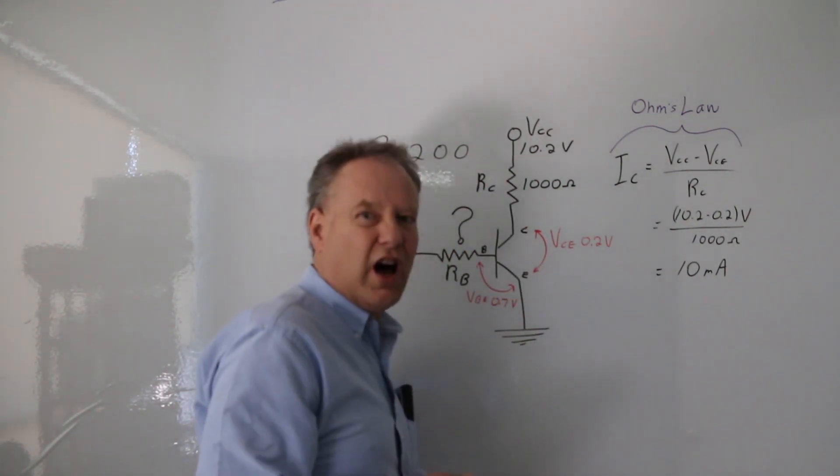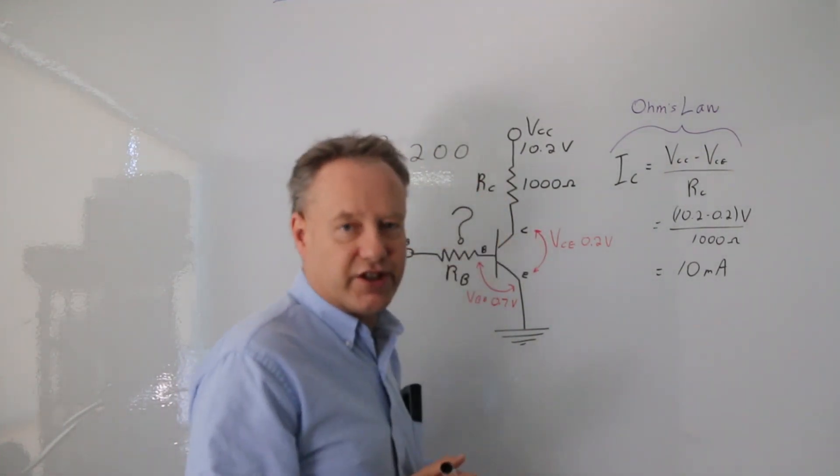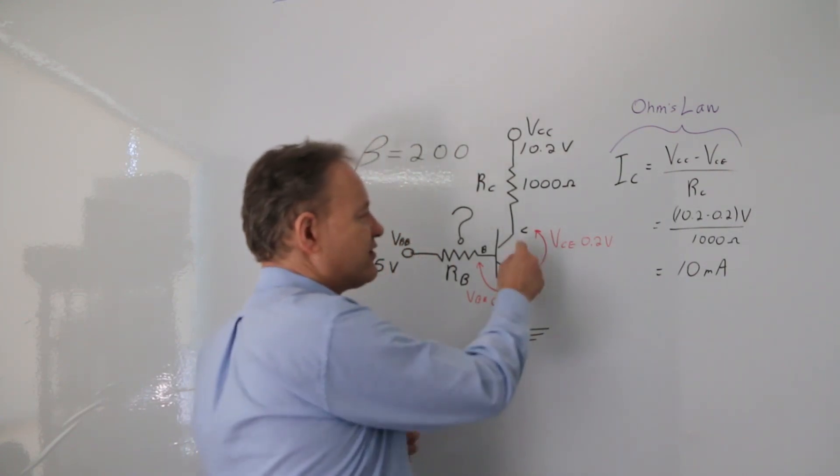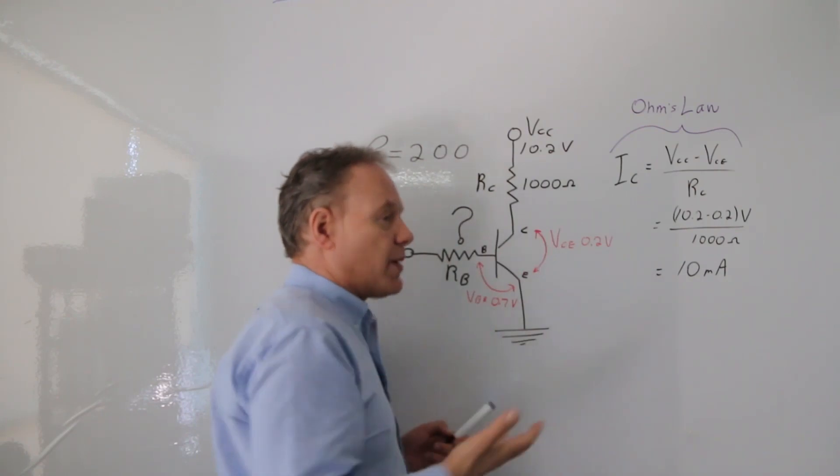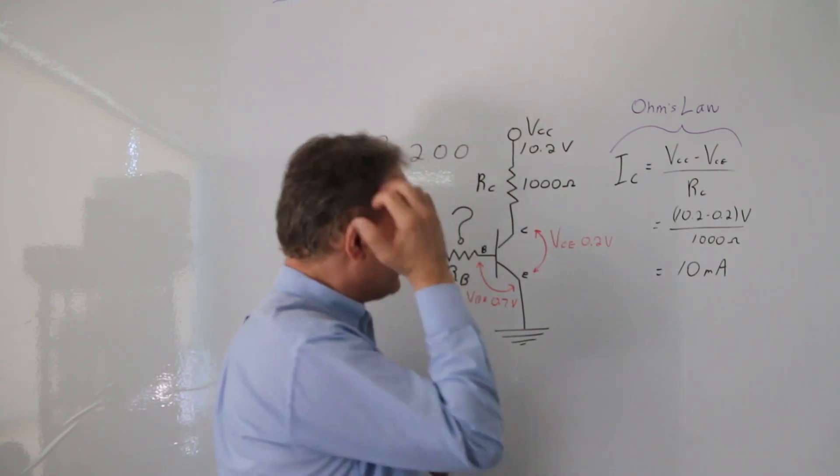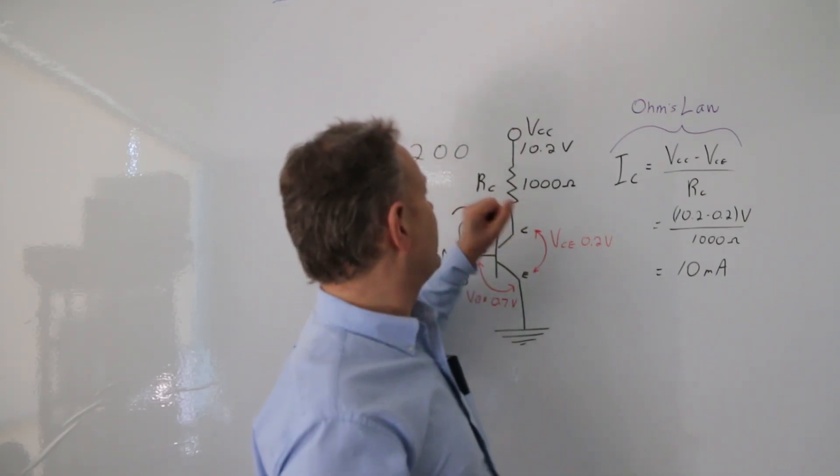Because Kirchhoff's law says that the voltage drops across the resistors in a series circuit, and this also, although it's not a resistor, has voltage drop. The voltage drops all add up to the source. So I know that this plus the voltage drop across this equals the source.